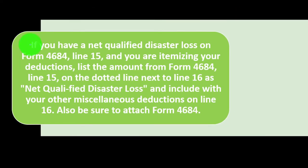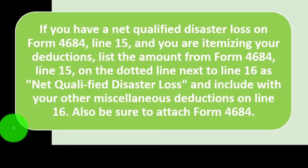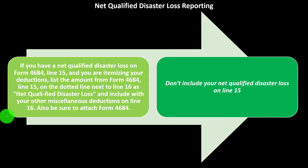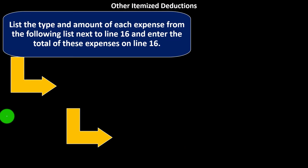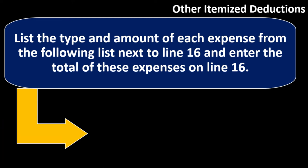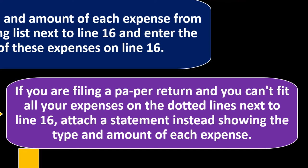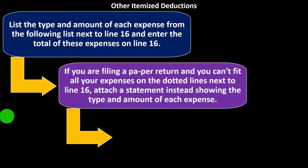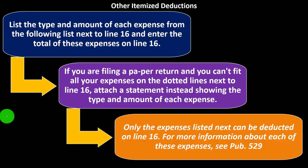Net Qualified Disaster Loss Reporting: if you have a Net Qualified Disaster Loss on Form 4684, Line 15, and you are itemizing your deductions, list the amount from Form 4684, Line 15, on the dotted line next to Line 16 as 'Net Qualified Disaster Loss,' and include it with your other miscellaneous deductions on Line 16. Be sure to attach Form 4684. Do not include your Net Qualified Disaster Loss on Line 50. If filing a paper return and you can't fit all your expenses on the dotted line next to Line 16, attach a statement showing the type and amount of each expense.